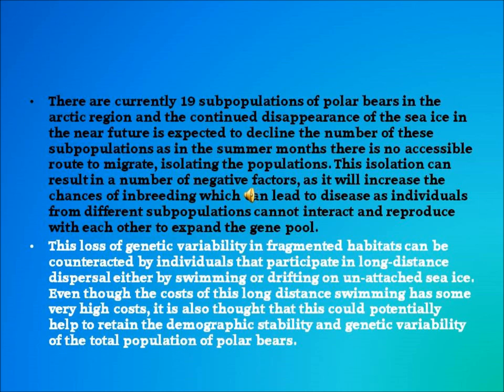There are currently 19 subpopulations of polar bears in the Arctic region, and the continued disappearance of sea ice is expected to decline the number of these subpopulations. In summer months there is no accessible route to migrate, isolating the populations. This isolation can increase the chances of inbreeding and disease as individuals from different subpopulations cannot interact and reproduce to expand the gene pool. This loss of genetic variability can be counteracted by individuals that participate in long-distance dispersal by swimming or drifting on unattached sea ice, potentially helping to retain the demographic stability and genetic variability of the total polar bear population worldwide.